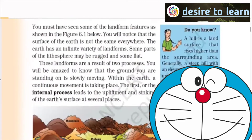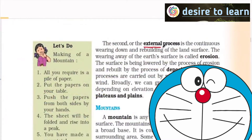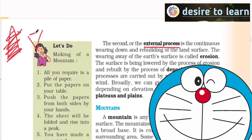In this book, they try to give you the basics about this. The first, or the internal process, leads to the upliftment and sinking of the earth's surface at several places. The second, or the external processes, usually increases or decreases. What happens is this will be completely eroded and this will be completely filled. The wearing away of the earth's surface is called as erosion, and it is being lowered by the process of erosion and rebuilt by the process of deposition.